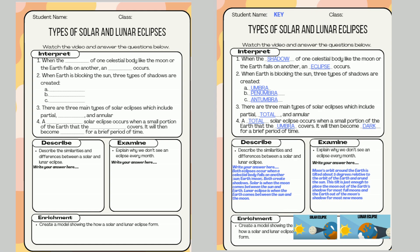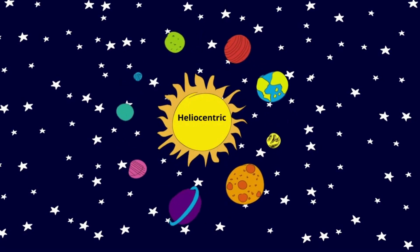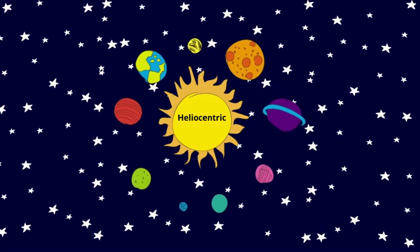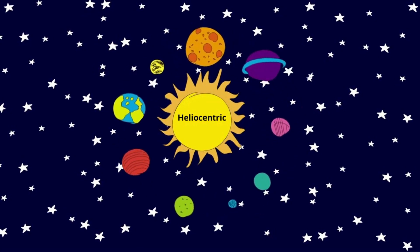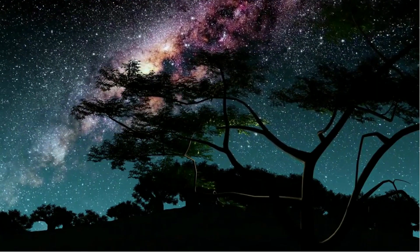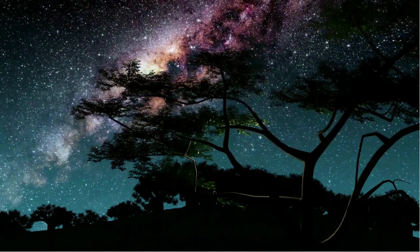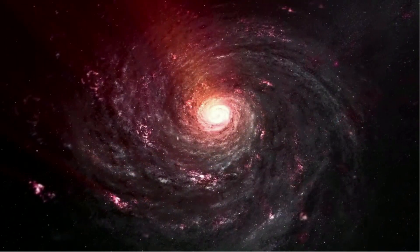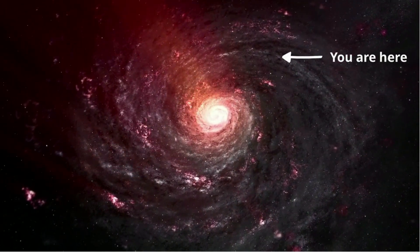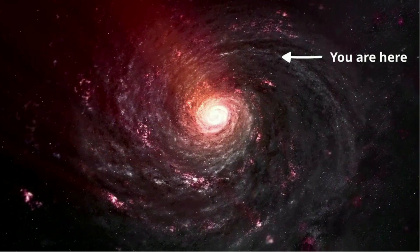Upon successful completion of the course, you will understand the historical development of the geocentric and heliocentric astronomical theories, and differentiate between the solar system, galaxy and universe and explain their relative sizes and scales.